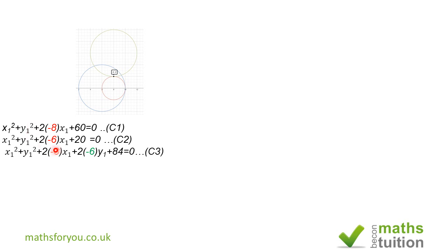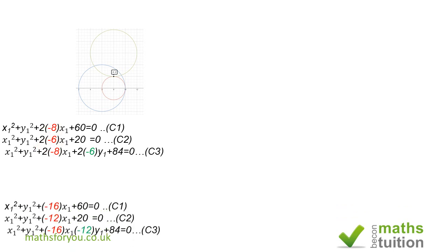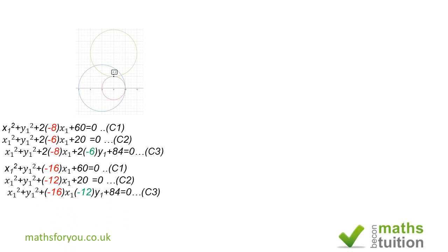I've now rewritten the three circle equations by multiplying out the 2g and 2f values. So with g = −8, f = 0, c = 60 for C1; g = −6, f = 0, c = 20 for C2; and g = −8, f = −6, c = 84 for C3 — giving us their fully expanded forms ready for subtraction.